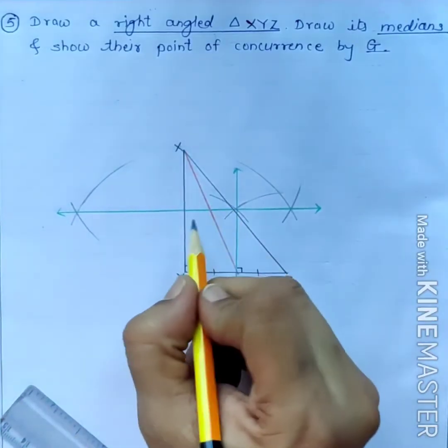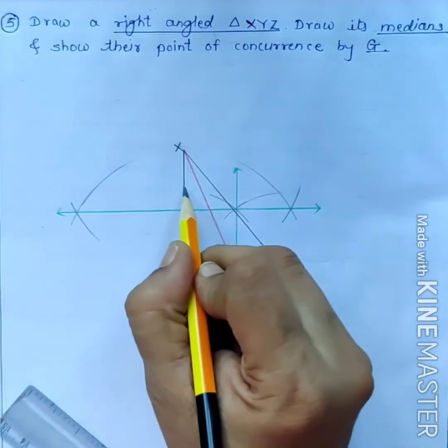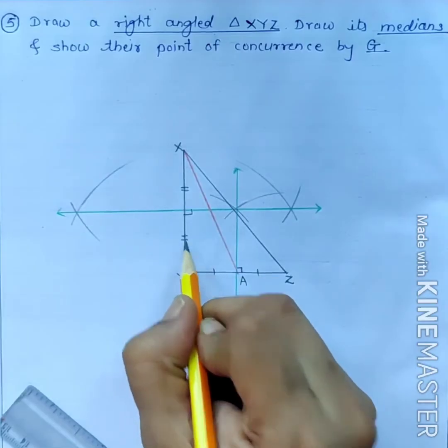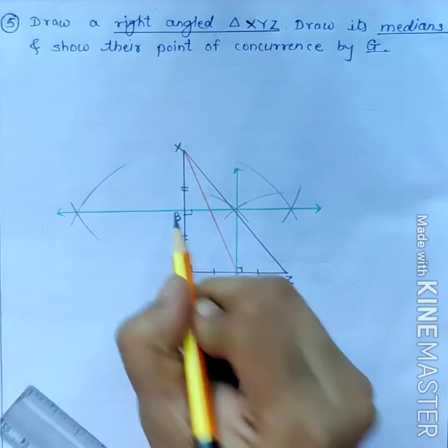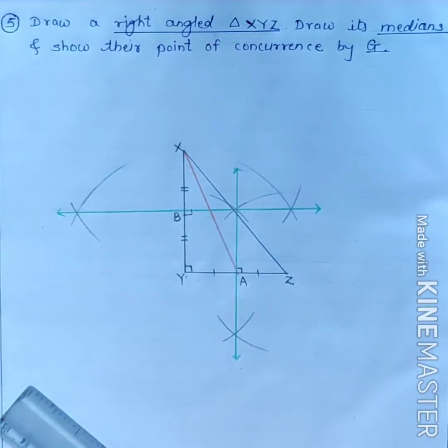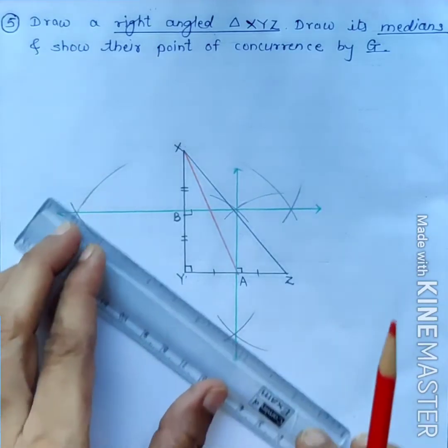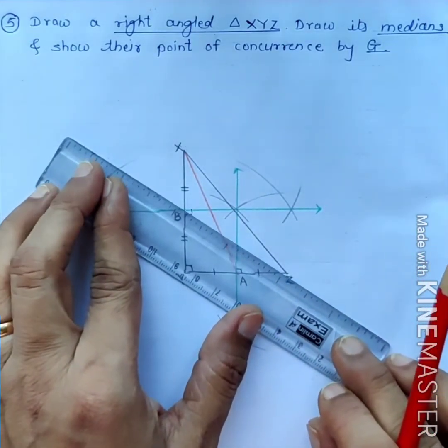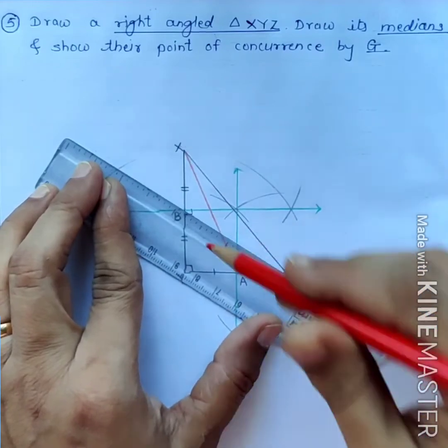This is perpendicular and bisector. Name this point as B. Join this midpoint of side XY to the opposite vertex Z. This is second median.